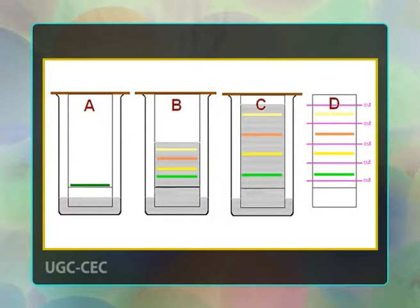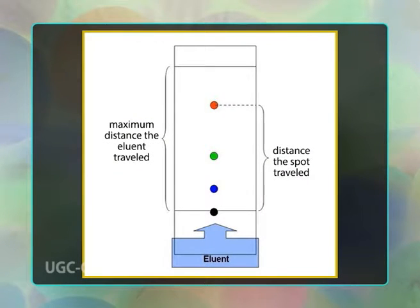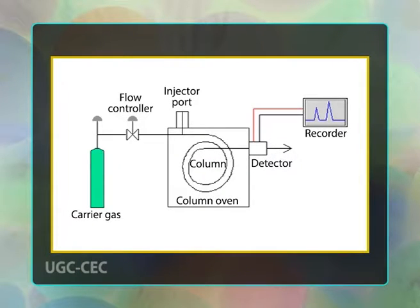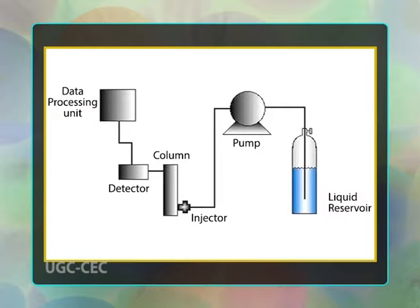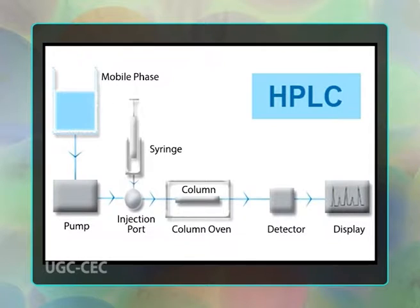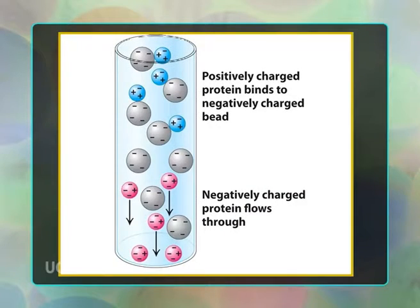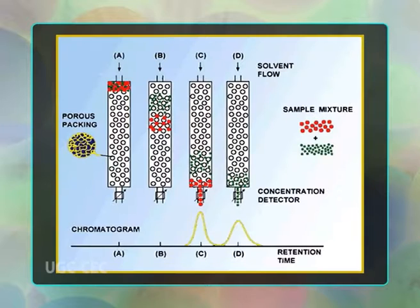There are several different types of chromatography currently in use: paper chromatography, thin layer chromatography (TLC), gas chromatography (GC), liquid chromatography (LC), high performance liquid chromatography (HPLC), ion exchange chromatography, and gel permeation or gel filtration.